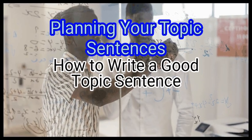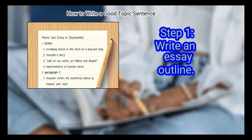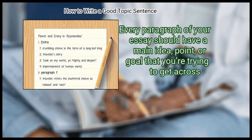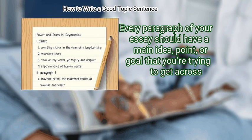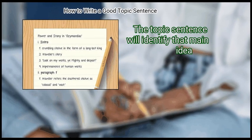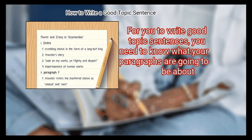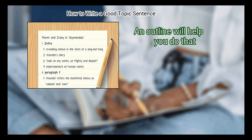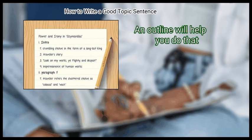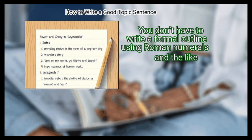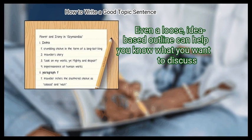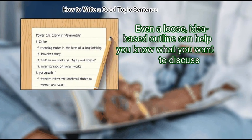Method 2: Planning your topic sentences. First, write an essay outline. Every paragraph of your essay should have a main idea, point, or goal that you are trying to get across, and the topic sentence will identify that main idea. For you to write good topic sentences, you need to know what your paragraphs are going to be about. An outline will help you do that — even a loose, idea-based outline can help you know what you want to discuss.